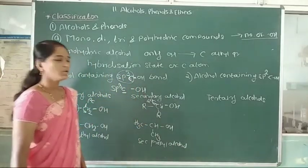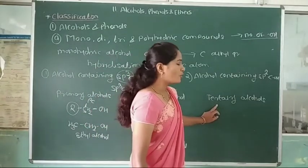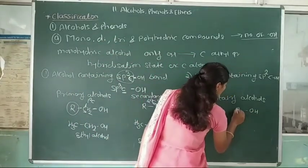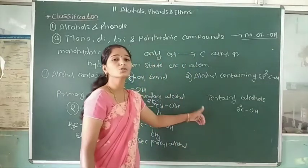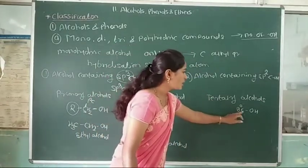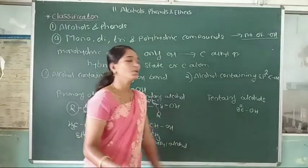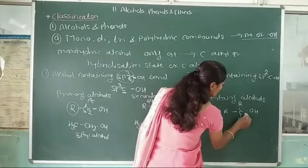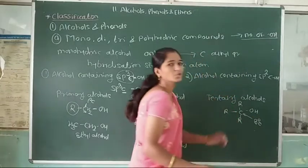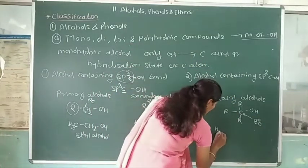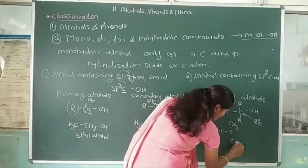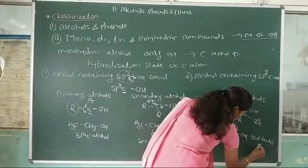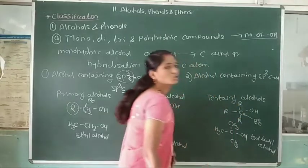Third, tertiary alcohol — the hydroxy group is attached to a tertiary carbon atom, meaning the carbon is attached to three other alkyl groups. For example, (CH3)3C–OH — this is called tertiary butyl alcohol.